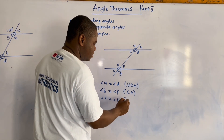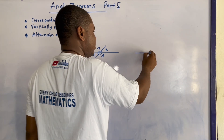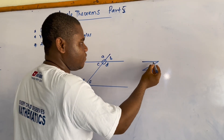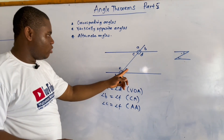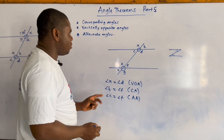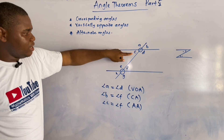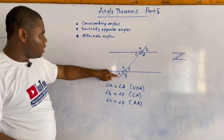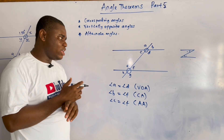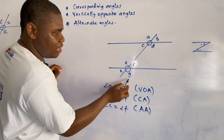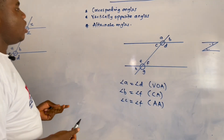For alternate angles, angle C is equal to angle F because they are alternate angles. Alternate angles usually form a Z shape, so whatever angle is here will also be the same here — that's why C equals F. We can also say A equals E as corresponding angles, and C equals H as corresponding angles. B equals C because they are vertically opposite, and E and G are vertically opposite, and H and F are vertically opposite.